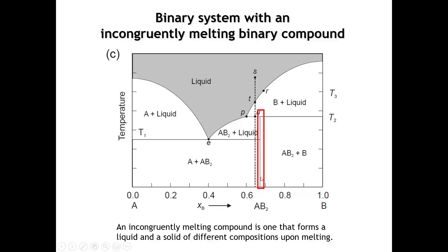Here, if we follow the AB2 line up until we get to a temperature of T2, once we go above T2 the compound starts to melt. But what we find in the region above T2 is an equilibrium mixture of B plus a liquid that is richer in A than the AB2 point where we started. Eventually we get to a point where there's more and more liquid, and when we cross the liquidus, we go back to a homogeneous sample — all liquid of composition AB2.